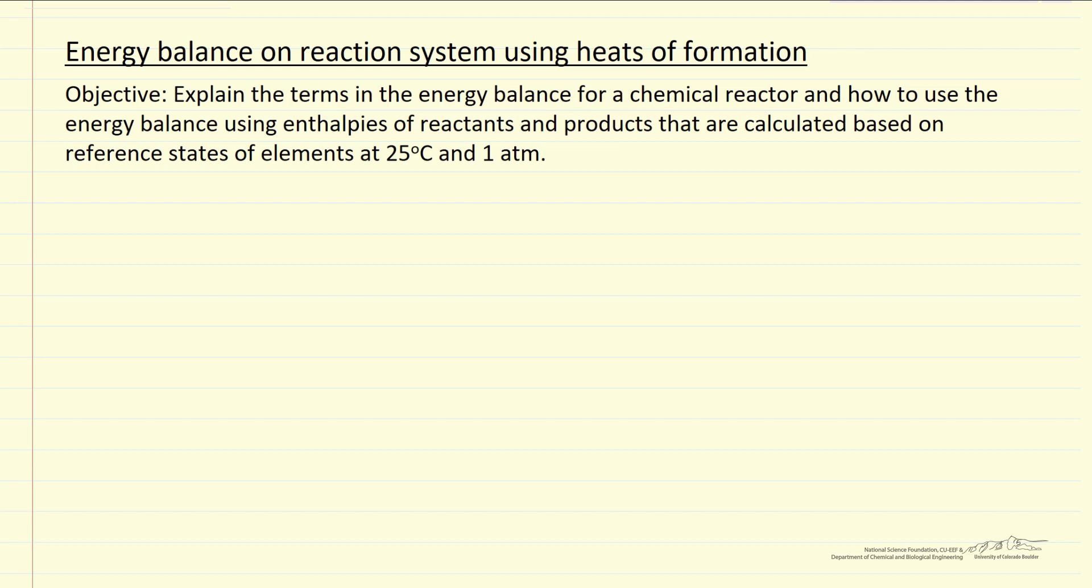Here we're going to look at how to do an energy balance on a chemical reactor. There's more than one approach that can be used to carry out this energy balance. We're going to use one based on using heats of formation that are incorporated into the enthalpies. Essentially what we're doing is taking the reactants and products and calculating their enthalpies based on the reference state of the elements at 25 degrees and one atmosphere.